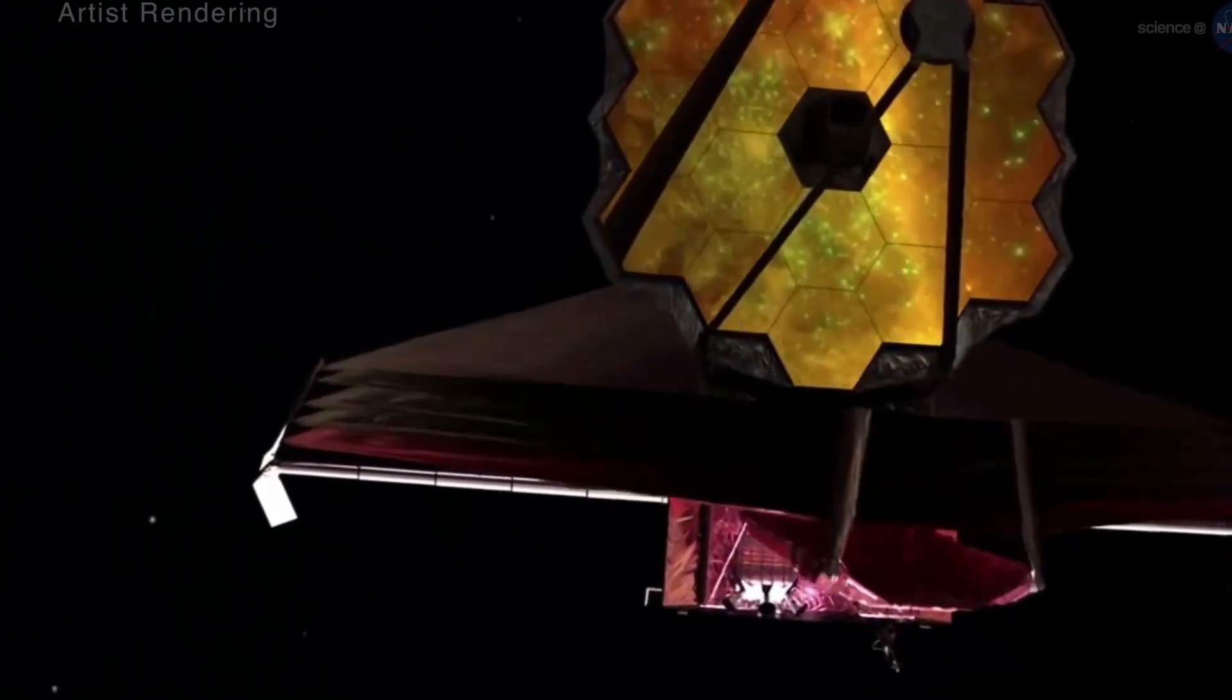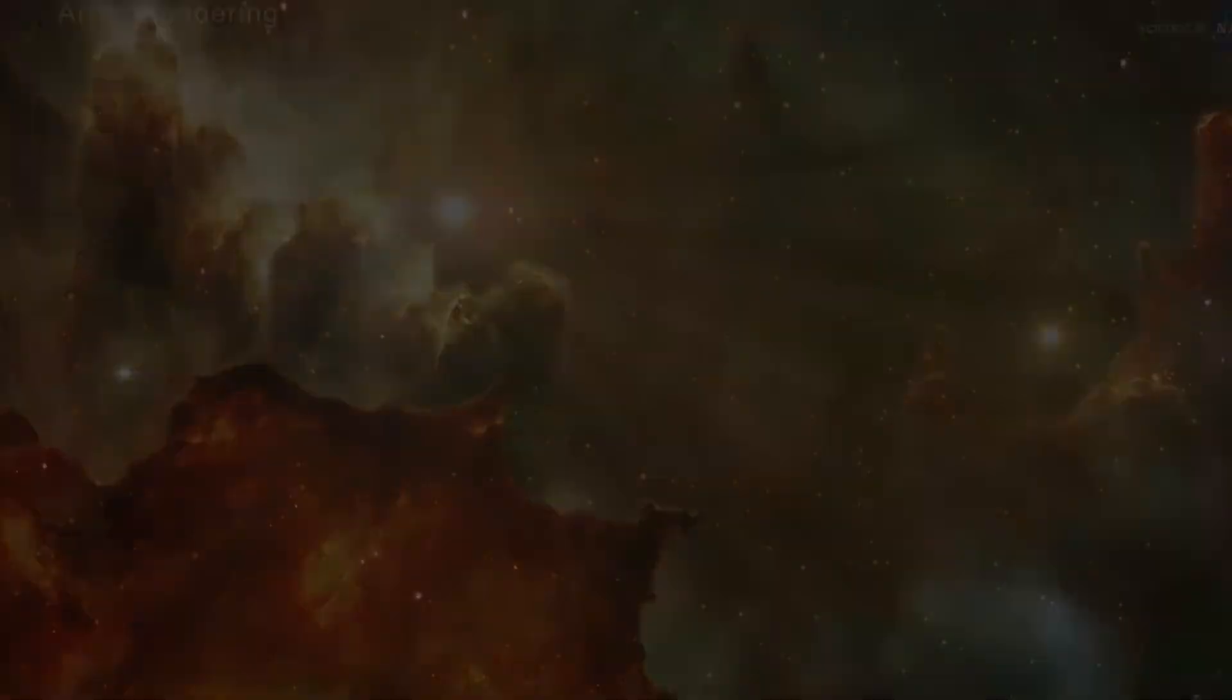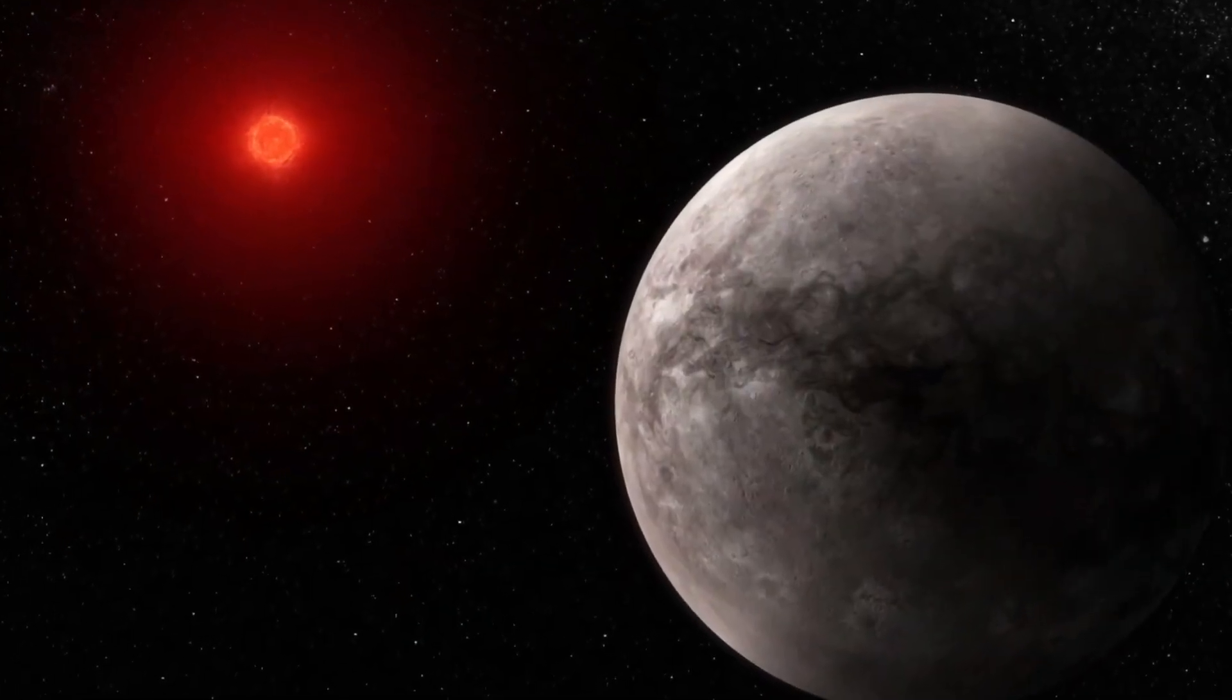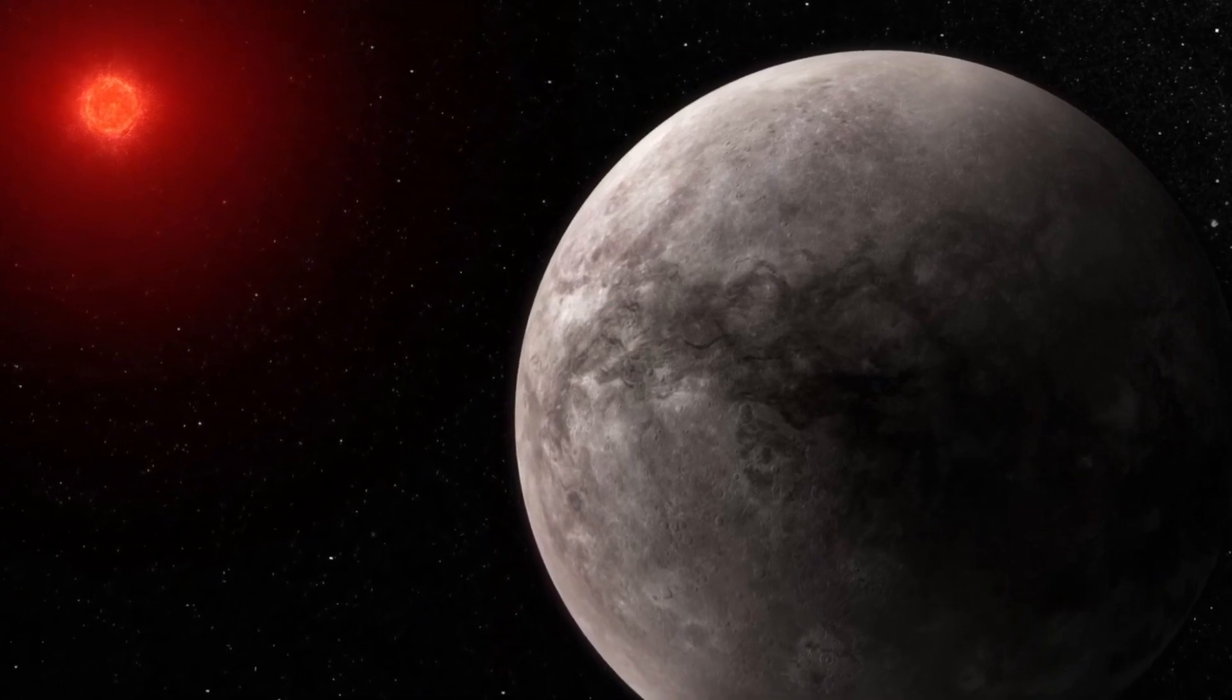Webb's mid-infrared sensor was used to measure the thermal emission. The results show that the planet's day side has a temperature of about 500 kelvins, which is about 450 degrees Fahrenheit, and that it doesn't have much of an atmosphere.